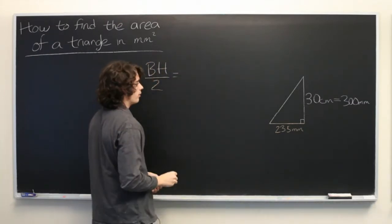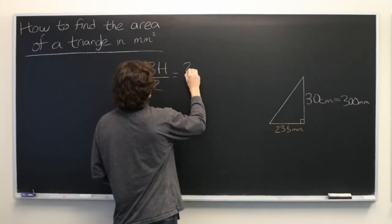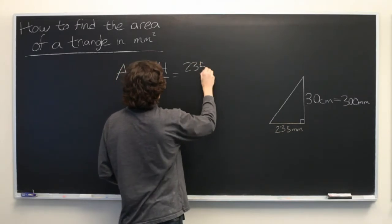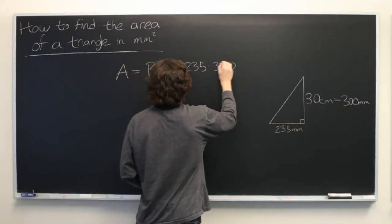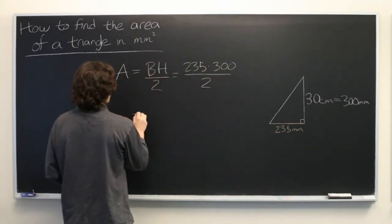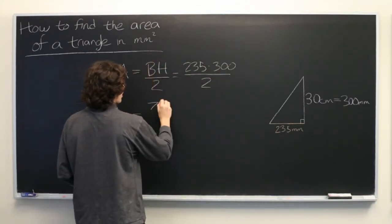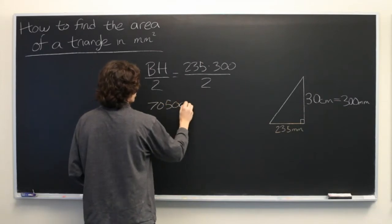We'll multiply these quantities together. We get 235 times 300 over 2, which is equal to 70,500 over 2.